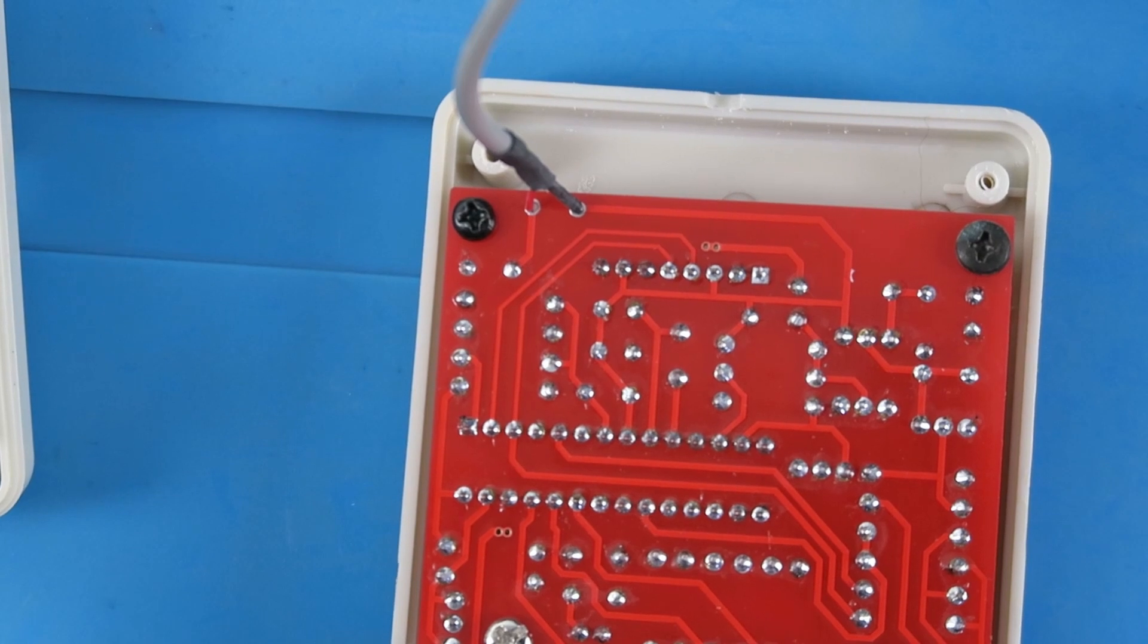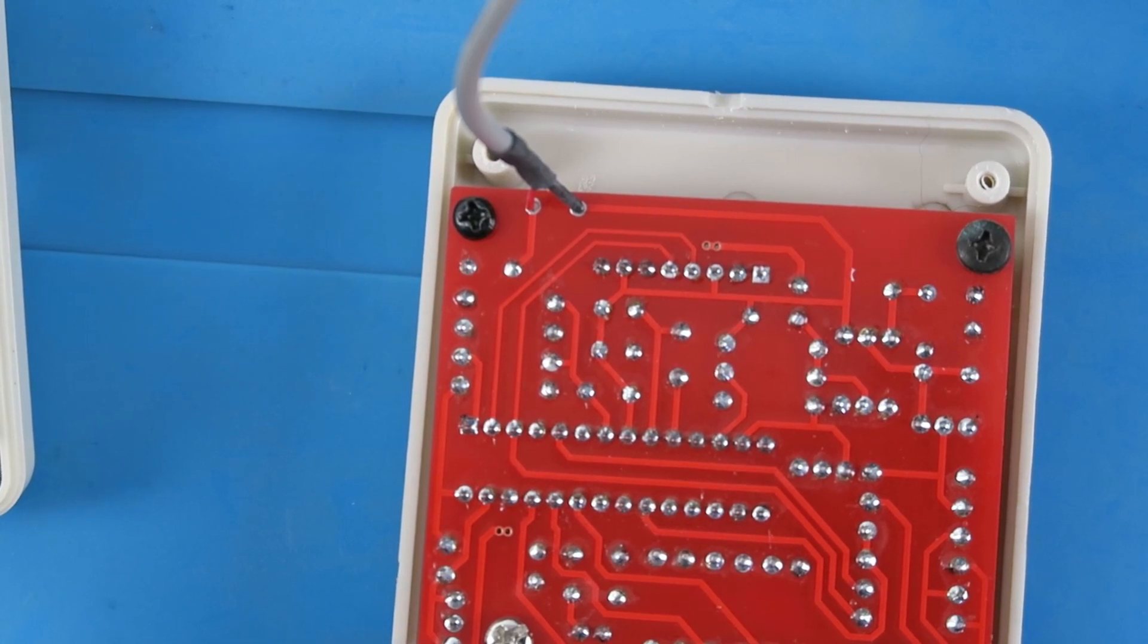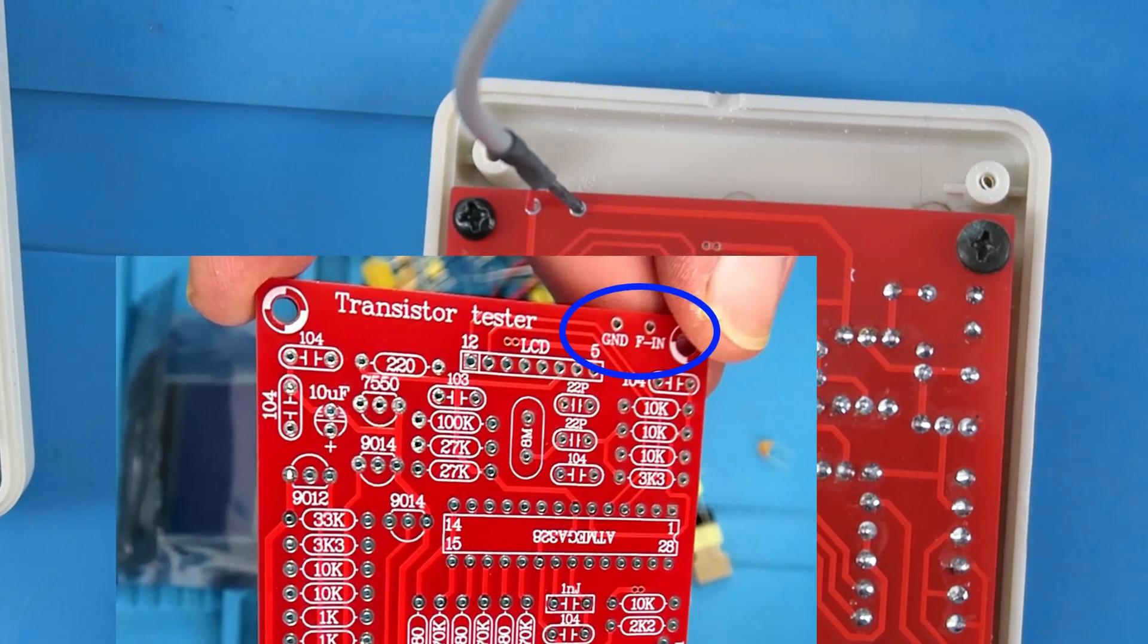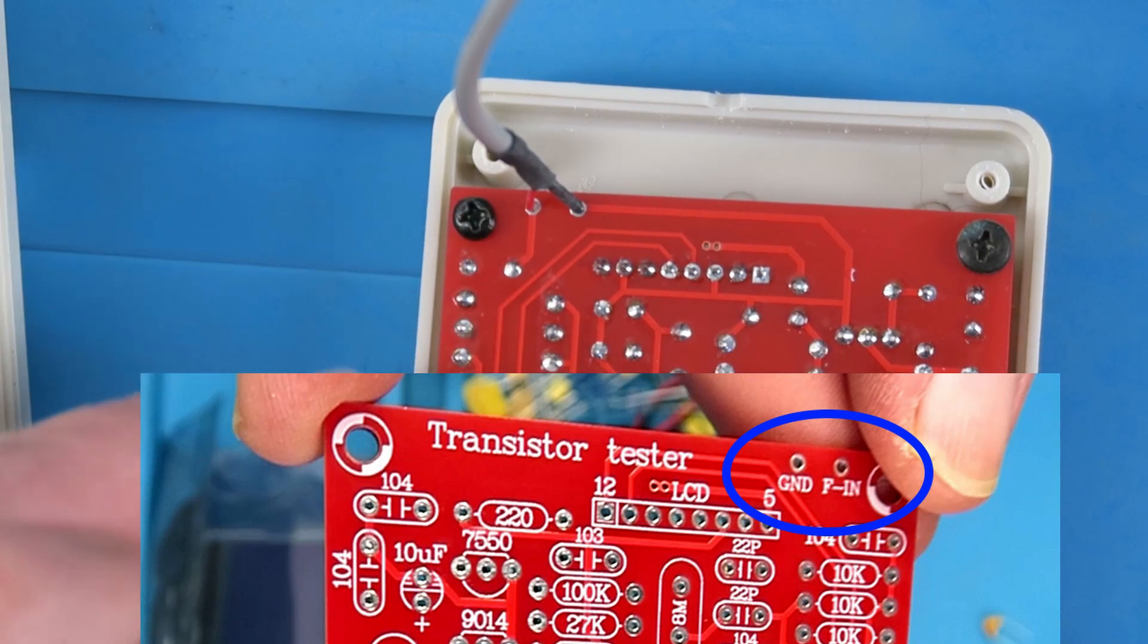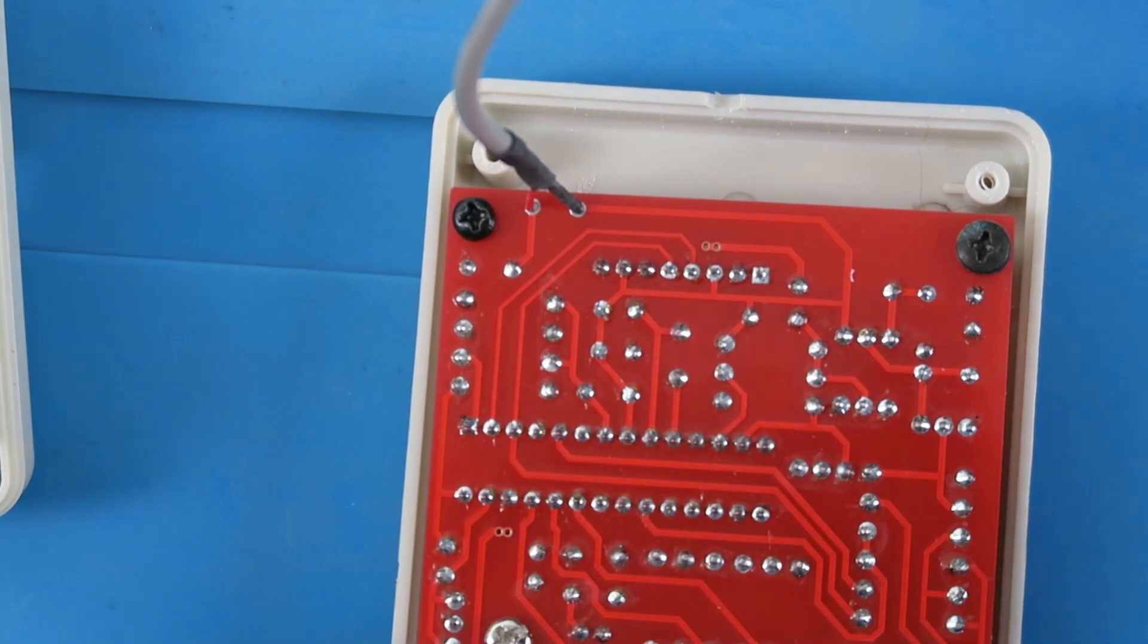I've opened the unit up and you can see in the photo of the front of the board, the frequency input is on the left-hand side nearest the screw here and the signal ground is to the right of it. So let's get that soldered in place.